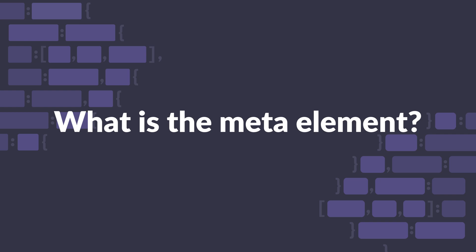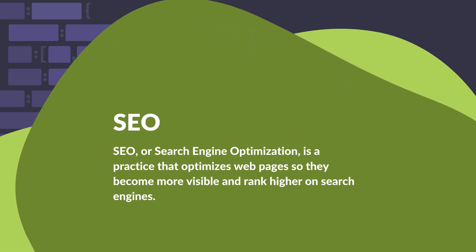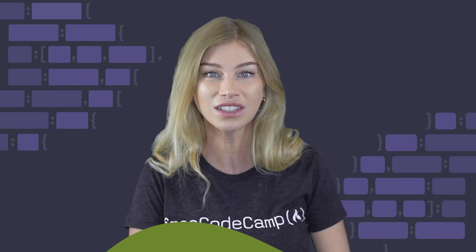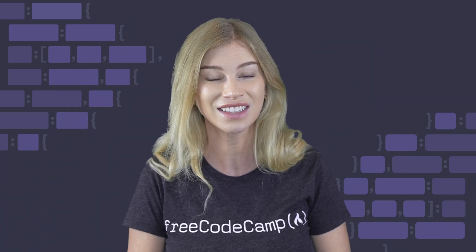What is the role of the meta description element and how does it affect SEO? SEO, or search engine optimization, is a practice that optimizes web pages so they become more visible and rank higher on search engines.